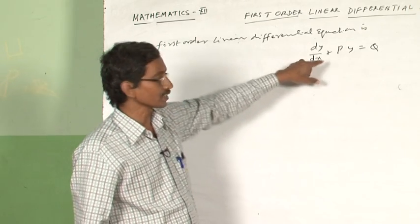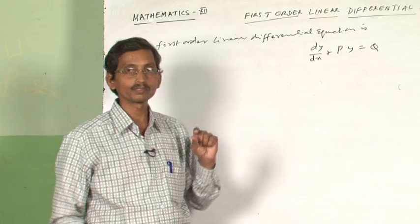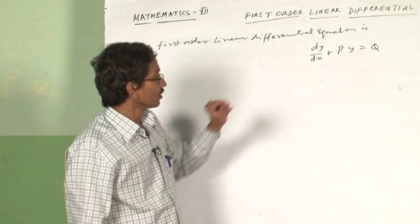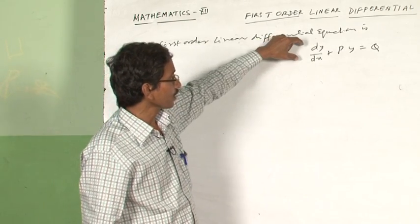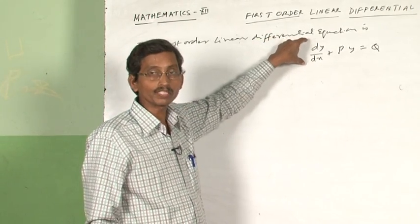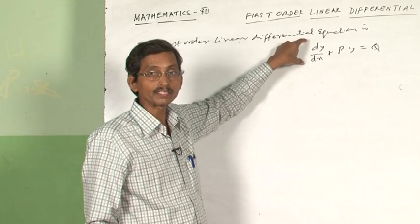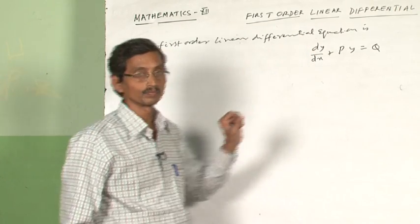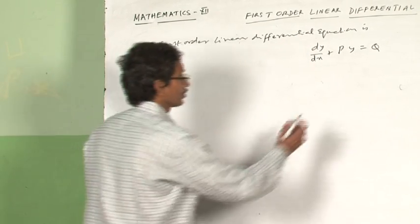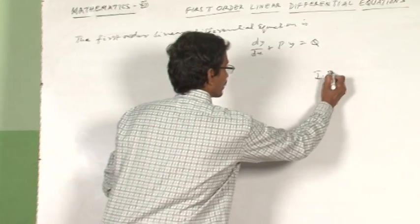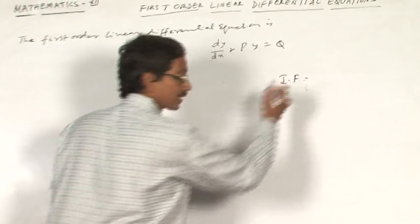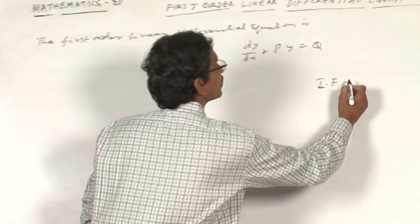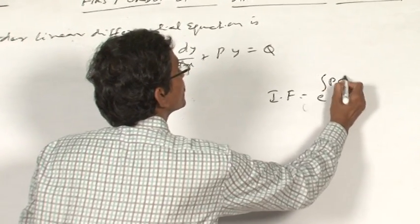I will multiply this equation by a function such that the left hand side of the differential equation becomes a derivative of some function of x and y. I call that function the integrating factor. The integrating factor is e to the power of integral of P dx.